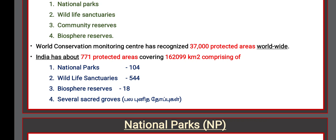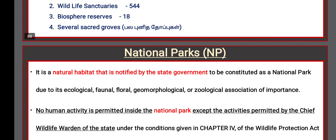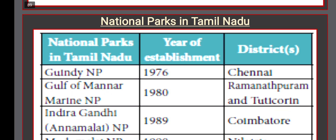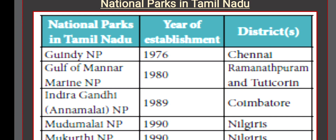A national park is a natural habitat notified by the state government due to its ecological, faunal, floral, geomorphological, or zoological importance. No human activity is permitted inside the national park except those permitted by the Chief Wildlife Warden of the State under Chapter 4 of the Wildlife Protection Act, 1972. The tabular column shows the national parks in Tamil Nadu, their establishment dates, and locations.